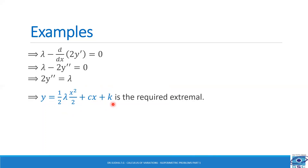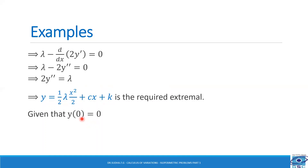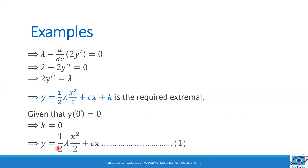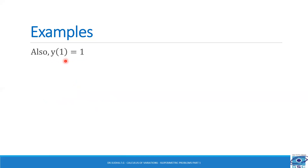To find the constants c and k as well as the Lagrange multiplier λ, we use the given conditions. Applying y(0) = 0 gives k = 0, so y = (λx²)/4 + cx (expression 1). Applying y(1) = 1 gives 1 = λ/4 + c (expression 2). Using the constraint integral from 0 to 1 of y dx = 2 and integrating, we get λ/12 + c/2 = 2, which simplifies to λ/6 + c = 4 (expression 3).